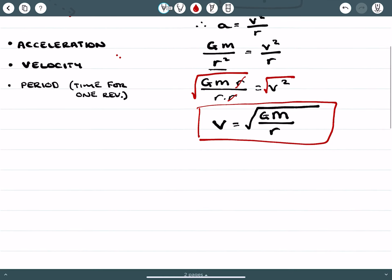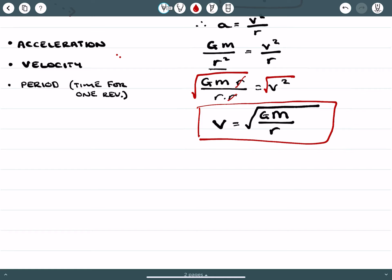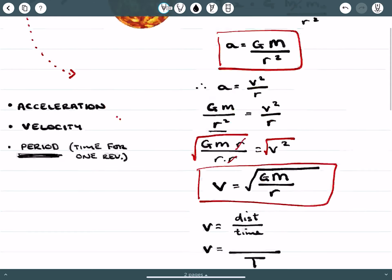Now if we start thinking about our period, well we know that our velocity is given by the distance that an object travels over the time it takes. And remember our period here, our period is a time for one revolution. So commonly we represent our period by a capital T.